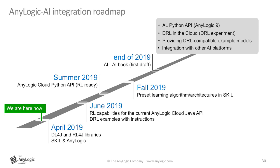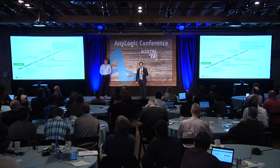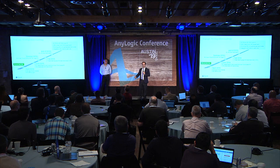We also have a plan for publishing a book or instructional document with several examples by end of year — if you're interested in collaborating on that, we'd be more than happy. Long-term goals include AnyLogic Python integration, AnyLogic 9, out-of-the-box reinforcement learning experiments in the cloud, reinforcement learning-ready example models, and exploring integration with other platforms. Our purpose is to make sure you have access to the latest reinforcement learning technologies in a simple, intuitive way.